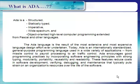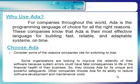These features reduce cost in software development, verifying, debugging, and maintenance that typically puts strain on an organization's resources over the life of the software. Why use ADA? For companies throughout the world, ADA is the programming language of choice for all the right reasons. These companies find that ADA is their most effective language for building fast, reliable, and adaptable systems on time. Some organizations choose ADA for its unique and powerful safeguards to improve reliability, as system errors could have fatal consequences. Other companies choose ADA for its ability to reduce software development and maintenance costs.